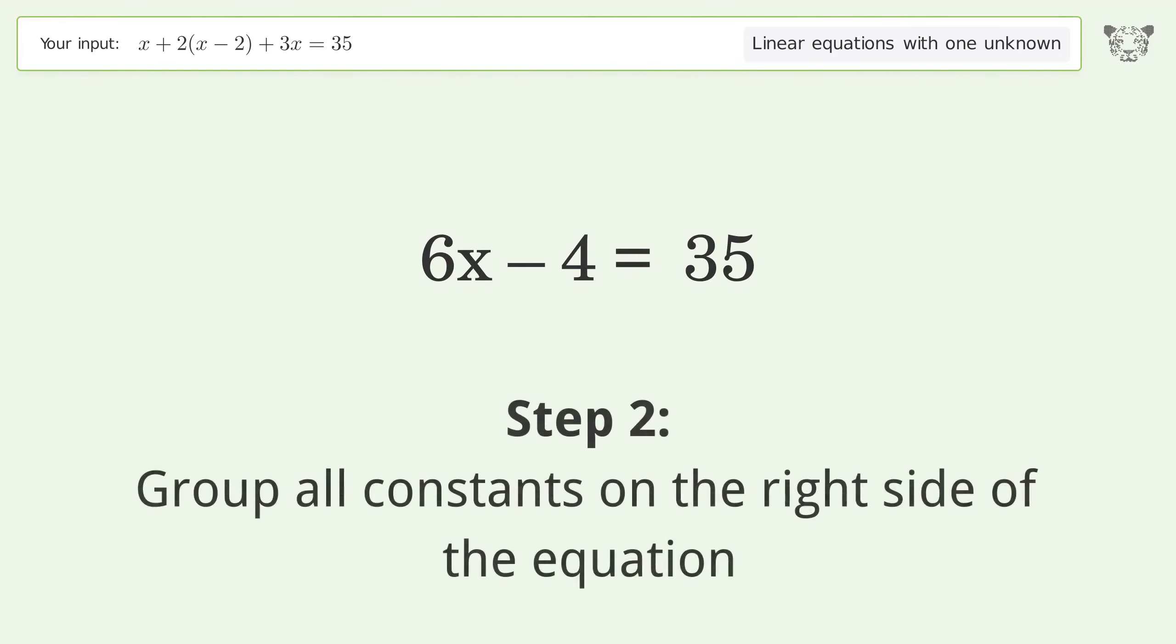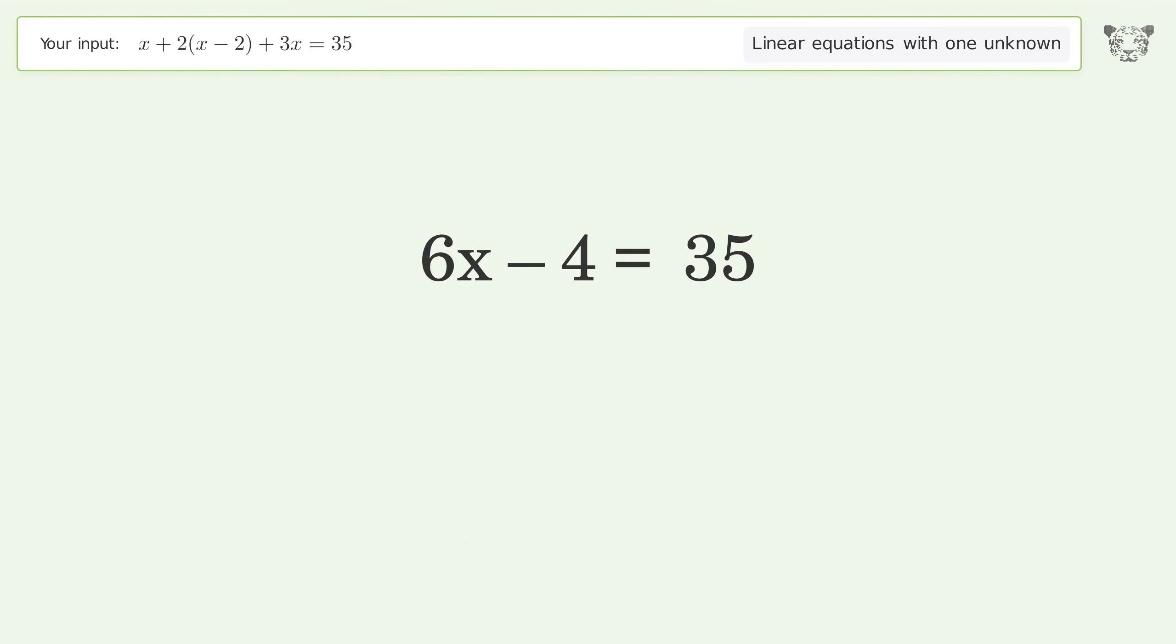Group all constants on the right side of the equation. Add 4 to both sides. Simplify the arithmetic.